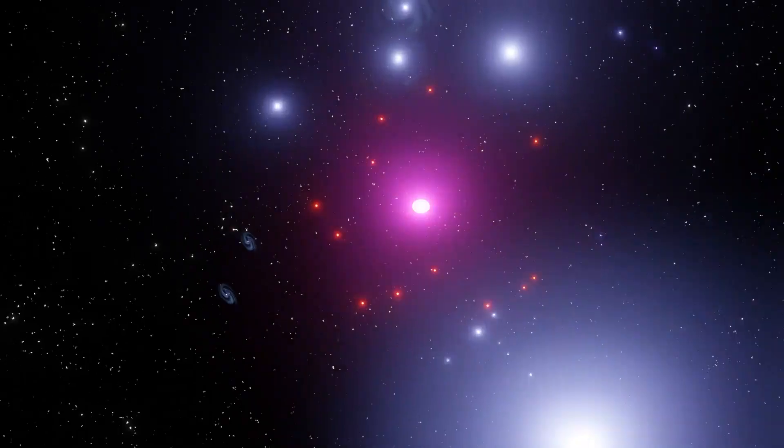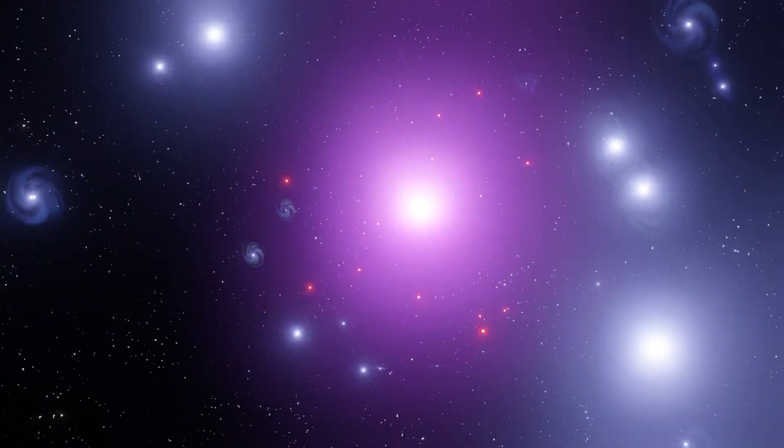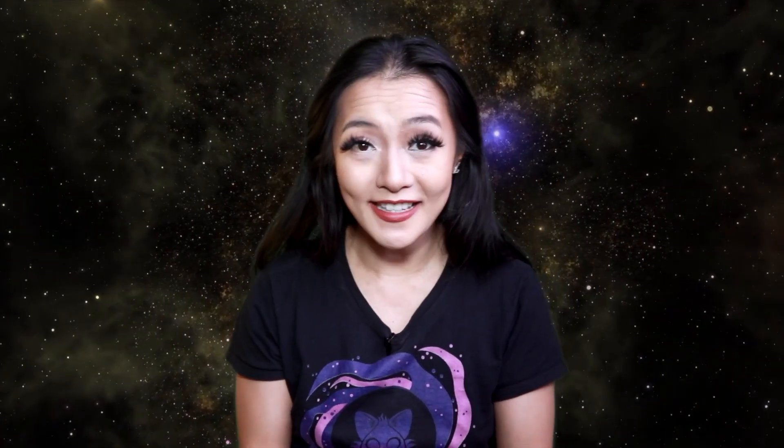These clusters are embedded within massive halos of dark matter, the elusive matter that interacts only through gravity and does not emit, absorb or reflect light. The majority of the mass is in the form of dark matter. And these dark matter halos are roughly spherical regions in space.